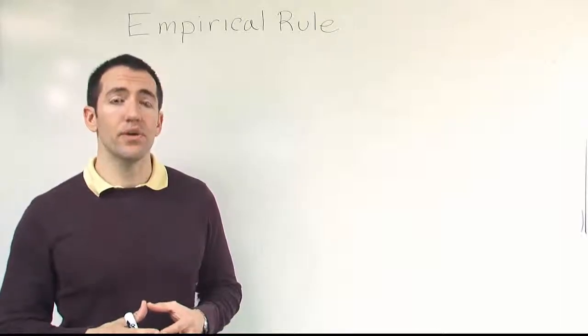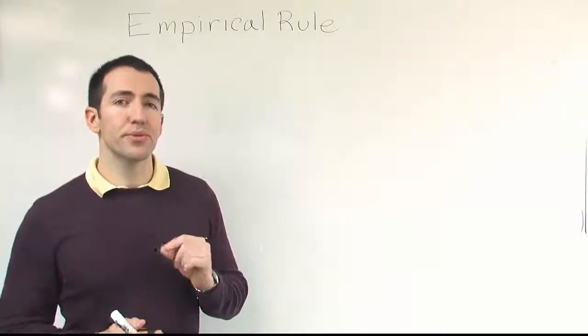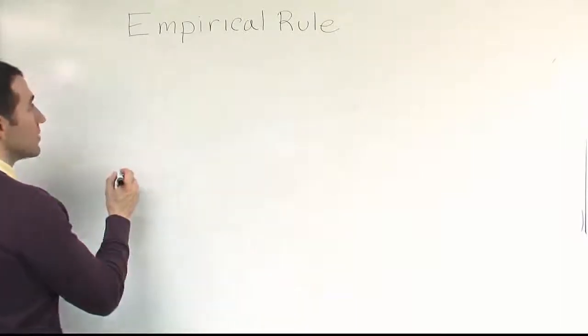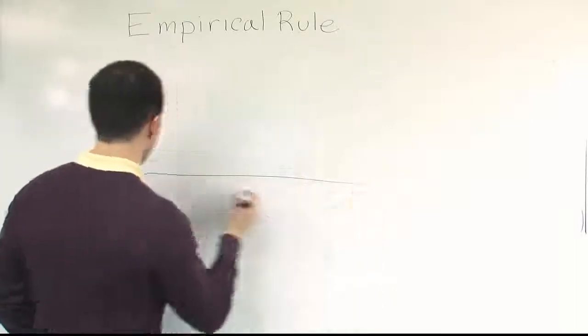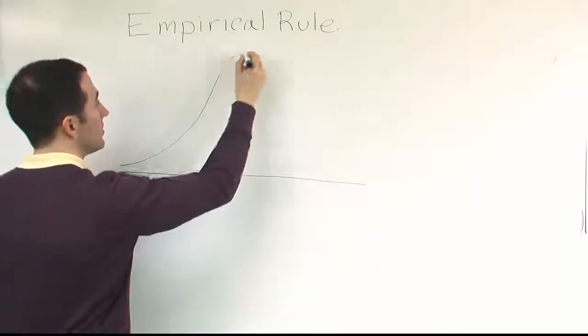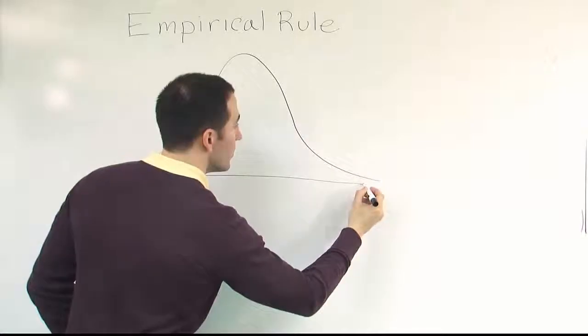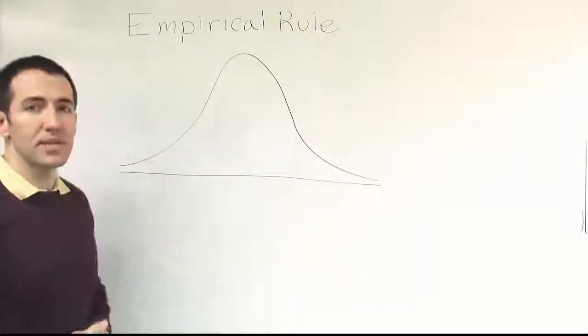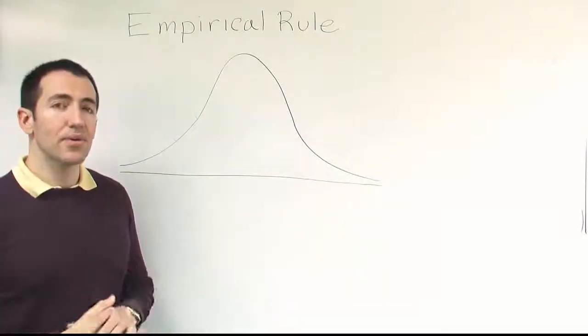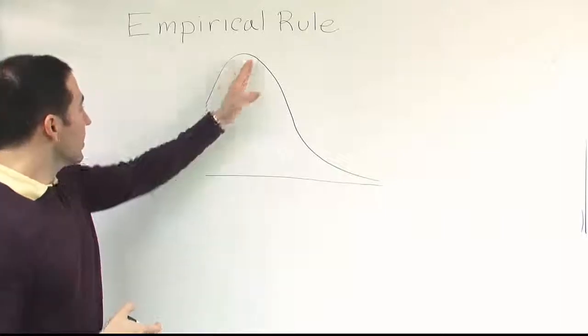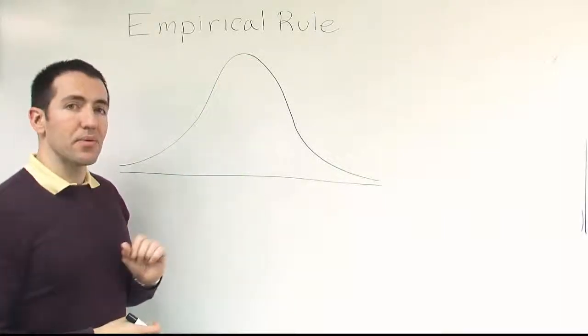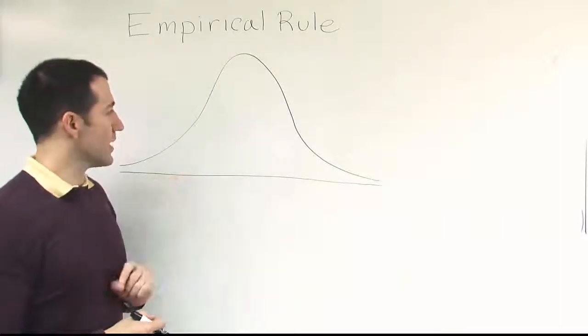In the case of the empirical rule, we're going to have to know that the distribution is bell-shaped. We're looking for the distribution to have this shape. If we know or have good reason to believe that it's bell-shaped, we can get better results than with Chebyshev's theorem.